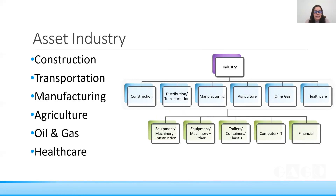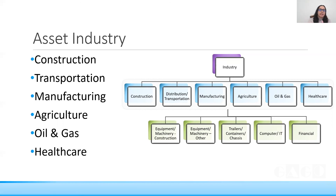Asset industries can be classified into different sectors: construction, transportation, manufacturing, agricultural, oil and gas, and healthcare. All these sectors share common requirements such as equipment, machinery, trailers, containers, computer and IT, and financial tracking tools. The asset management scope depends on what the client requires — they might need it for one industry or for multiple sectors.